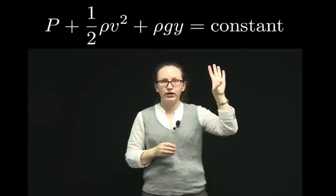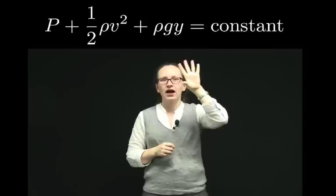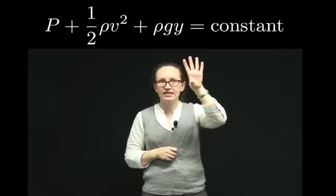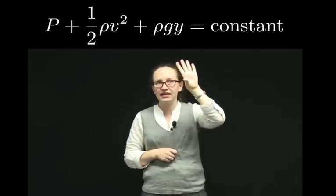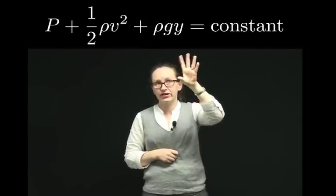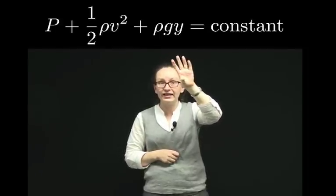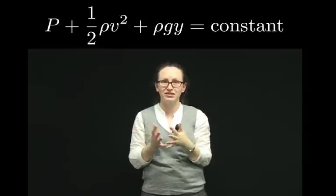Now another important rule that describes ideal fluid flow is called Bernoulli's equation, named after the man who discovered it. Bernoulli's equation tells us that the pressure plus half the density times the velocity squared, plus the density times the acceleration due to gravity times the height, is equal to a constant.